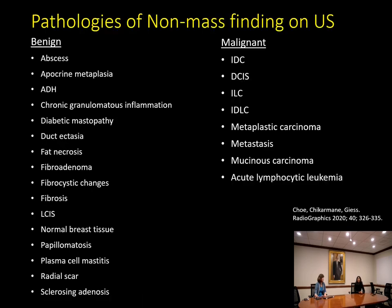There is a long list of various pathologies for non-mass findings, and there are many benign conditions that can cause non-mass findings on ultrasound. The malignancies are of most interest — and because invasive ductal cancer is our most common breast malignancy, it is most represented in malignant non-mass findings. Invasive lobular cancer is also somewhat disproportionately represented in malignant non-mass ultrasound findings, probably because of its growth pattern.